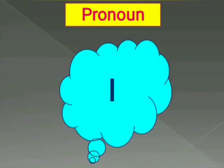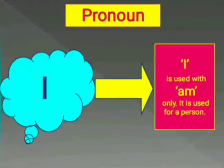Now we are going to talk about only one word which is 'I', as it is related to the use of am. 'I' means 'mai' in Hindi — I am talking about myself. If you say 'I', you will say 'I am'. So you are going to talk about yourself, and with I, we always use am.